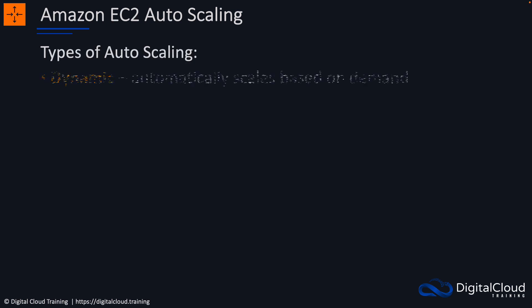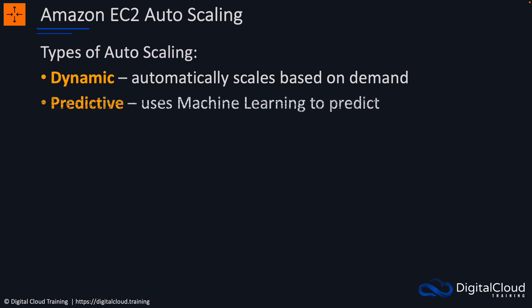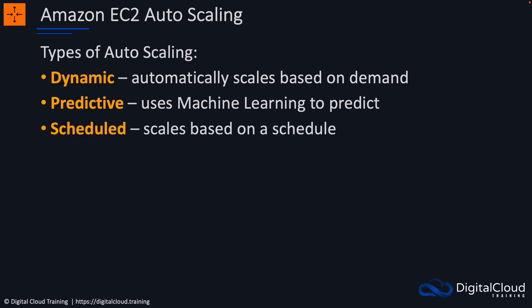There are different types of auto scaling. Dynamic means auto scaling automatically scales based on demand. Predictive uses machine learning to predict what's likely to happen in the future. And scheduled will scale based on a schedule that you can define.